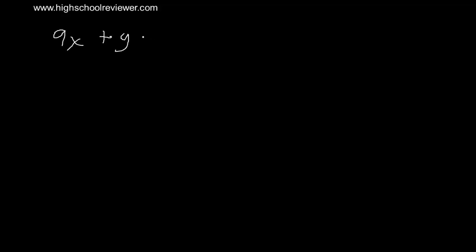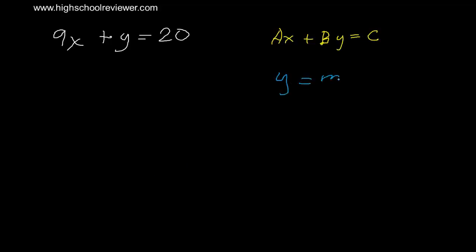Converting ax plus by equals c to y equals mx plus b. Let's have an example: we have 9x plus y equals positive 20. This is of the form ax plus by equals c, and we have to convert this to the form y equals mx plus b. It's just easy — we have to leave the y variable on one side and transpose or transfer all other variables to the other side.